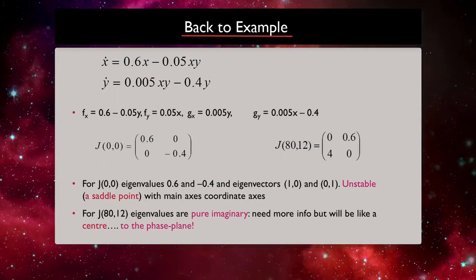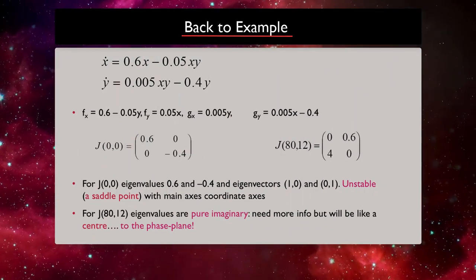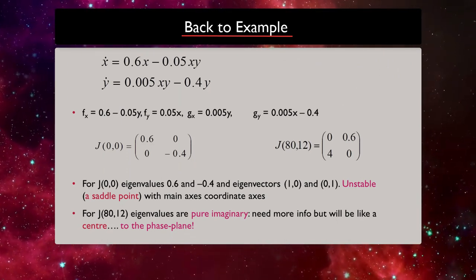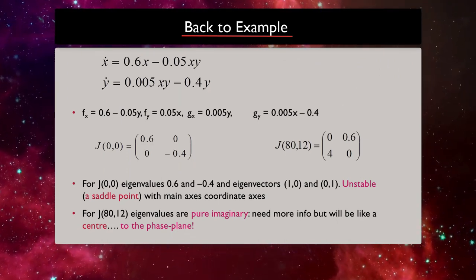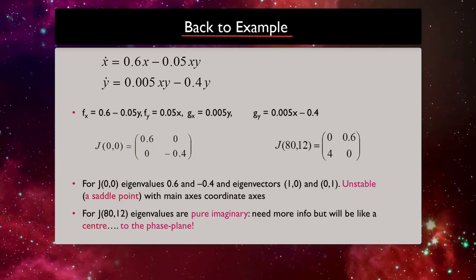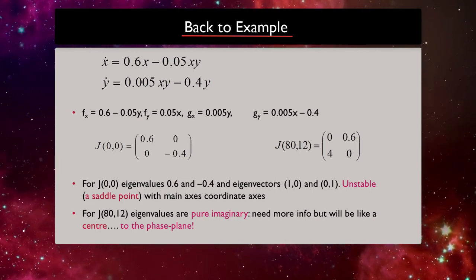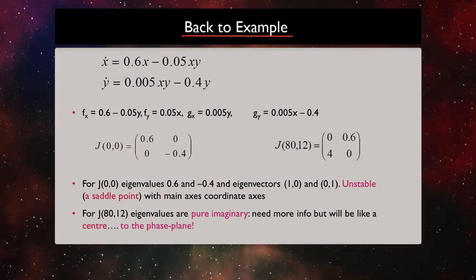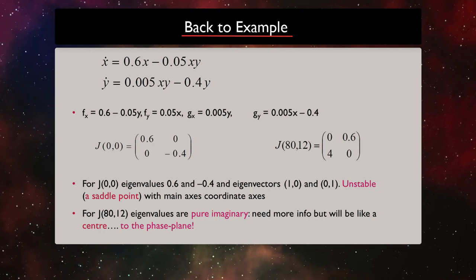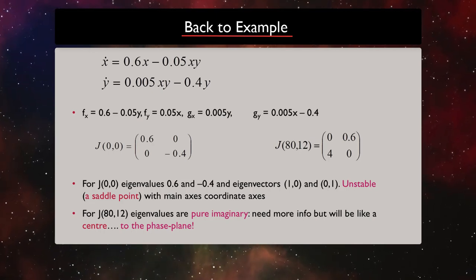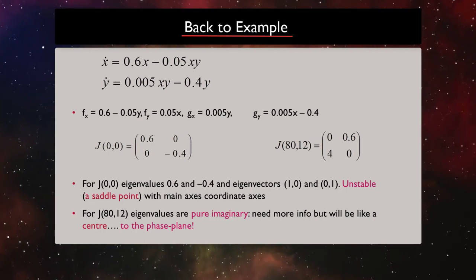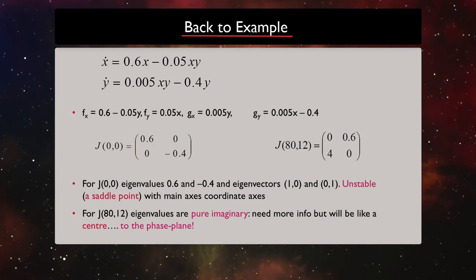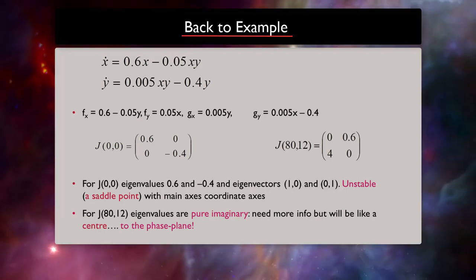Now, if we go back to our example, the predator-prey system, you saw that that system had two fixed points. If we want to know the stability of those fixed points without doing the perturbations, we can use the Jacobian matrix. If we calculate the partial derivatives with respect to x and y for both equations and evaluate the eigenvalues at those two fixed points, we can see if they are stable or not.